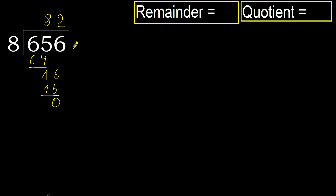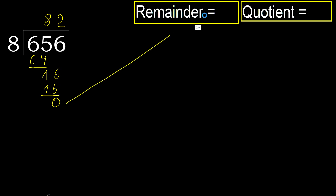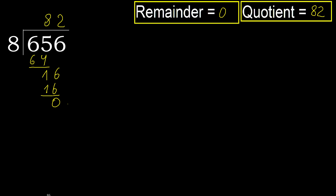Next: there is no number, therefore finish. 656 divided by 8 is 82.